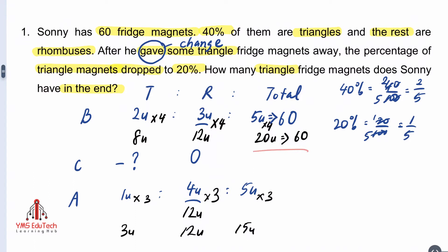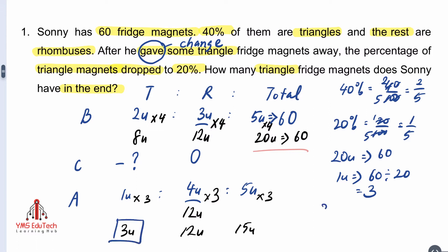So, 20 units is equivalent to 60 magnets. 1 unit will be 60 divided by 20, which is 3 magnets. The question wants to know how many triangle fridge magnets Sony has in the end — that is 3 units. So 3 units is equivalent to 3 multiplied by 3, which makes 9 triangle magnets left.